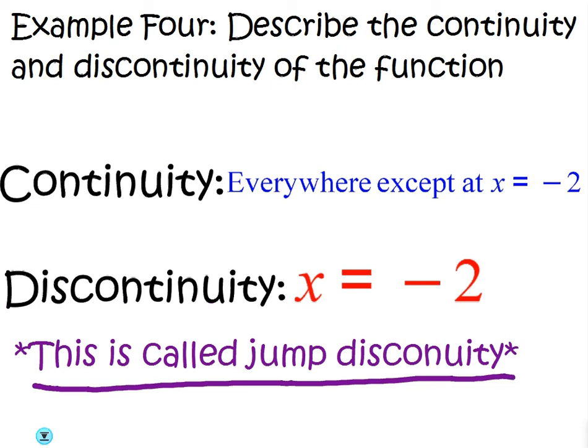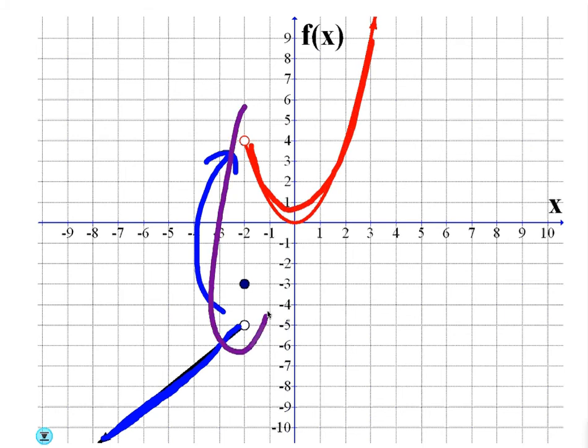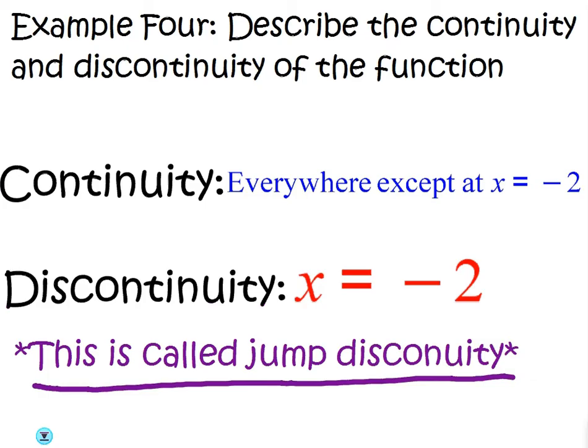Now, notice, it's kind of like removable in the fact that it's going to be continuous everywhere except for that jump. So, for example, as long as we're on either one of these curves, it's going to be continuous. The only place that it's discontinuous or there's a break is at x equals negative 2.